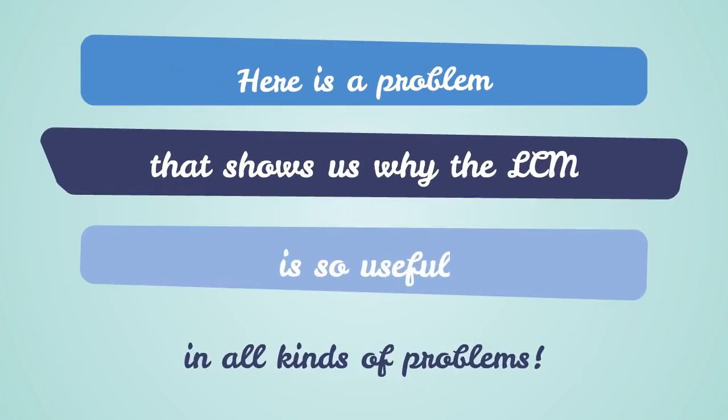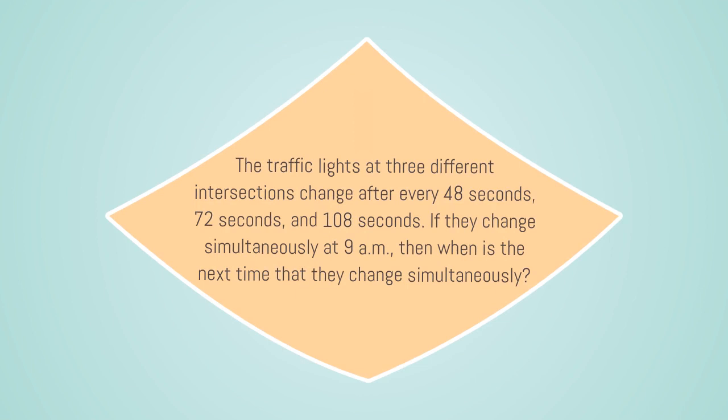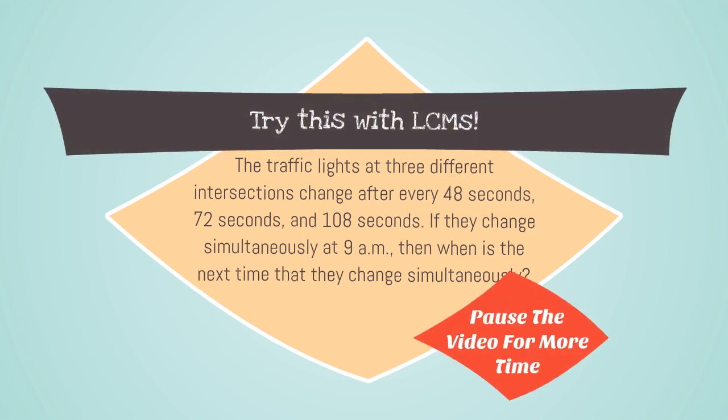Here is a problem that shows us why the LCM is so useful in all kinds of problems. The traffic lights at three different intersections change after every 48 seconds, 72 seconds, and 108 seconds respectively. If they change simultaneously at 9 am, then what is the next time that they change simultaneously? Try this problem with LCM.